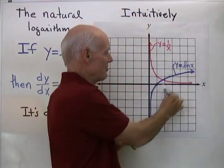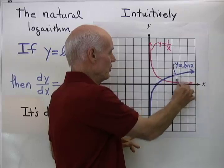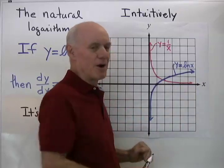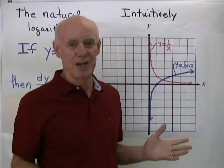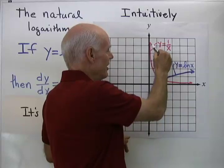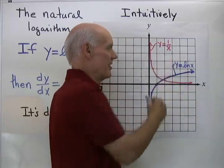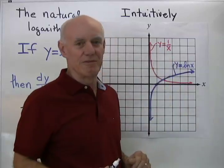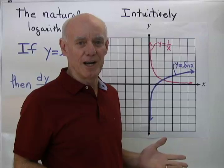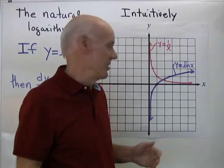On this graph, I've drawn in blue the graph of y = ln(x), and over here I've graphed in red what I think its derivative is — y = 1/x. Let's see if this makes sense.